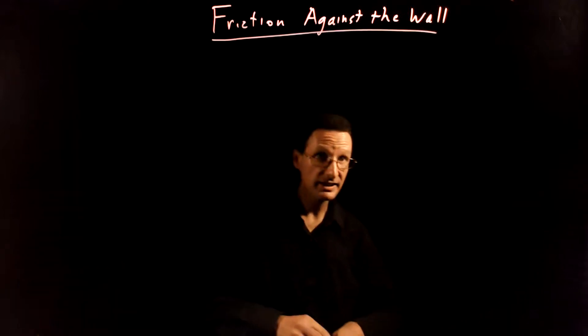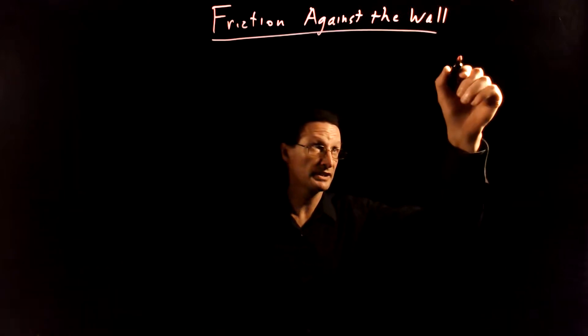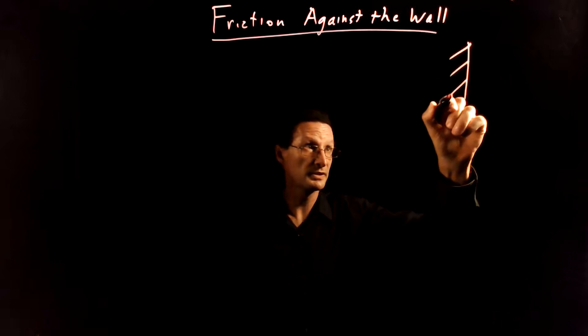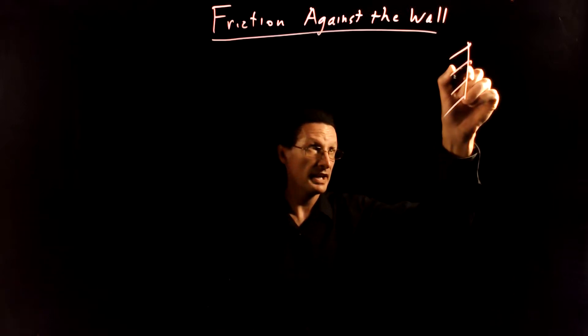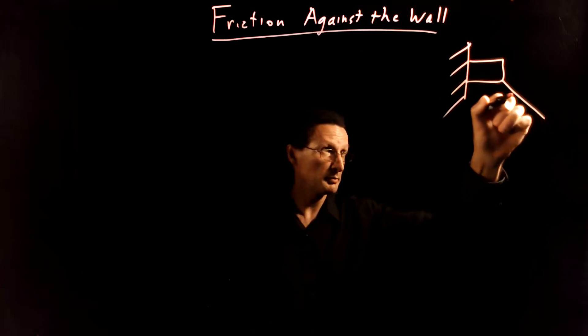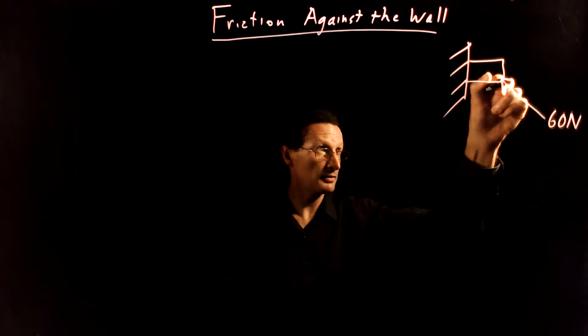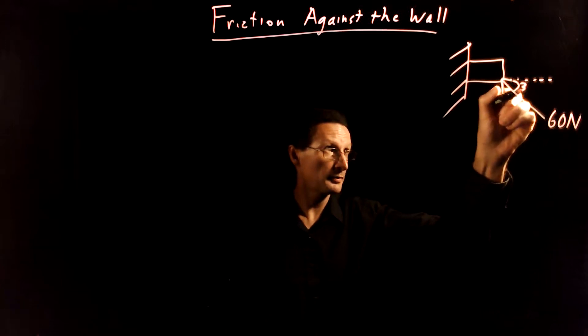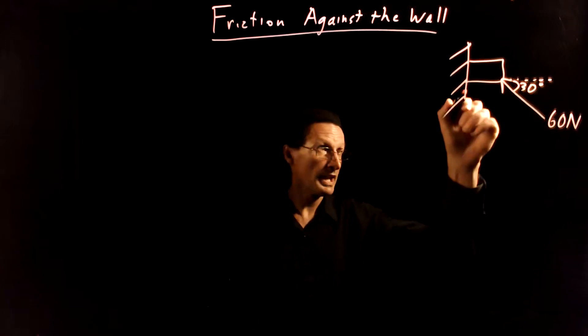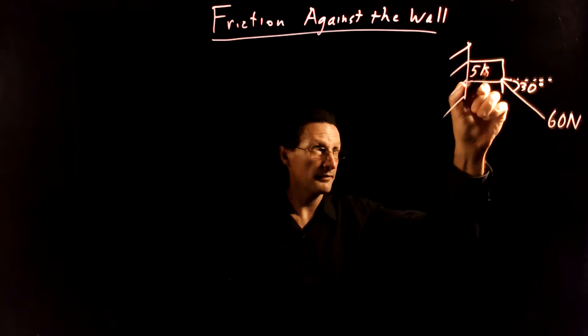So to do that let's use our problem solving framework. Let's first draw a picture of what's going on. Here's the wall and here's the box and the box is being pushed with a 60 Newton force up at an angle that is 30 degrees to the horizontal and the box has a mass of five kilograms.